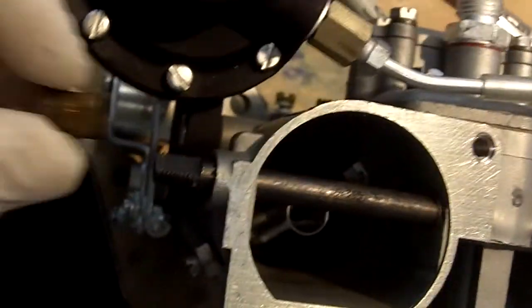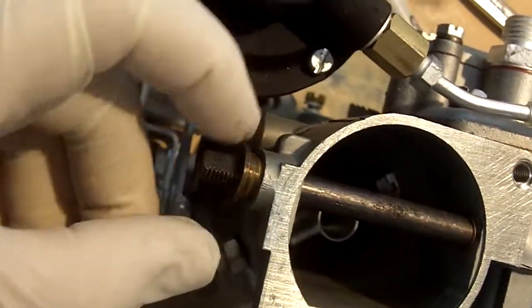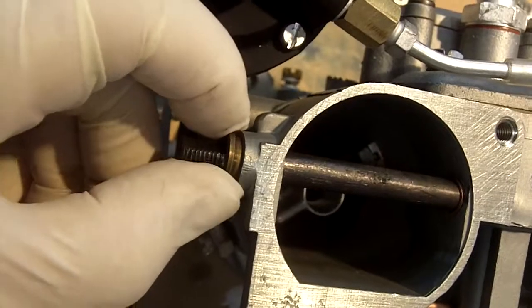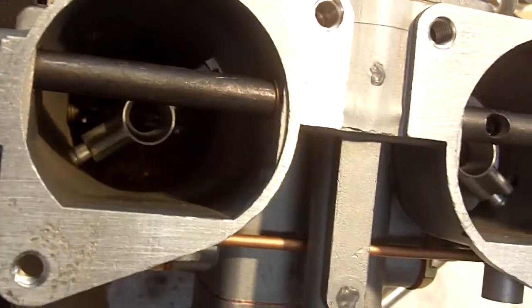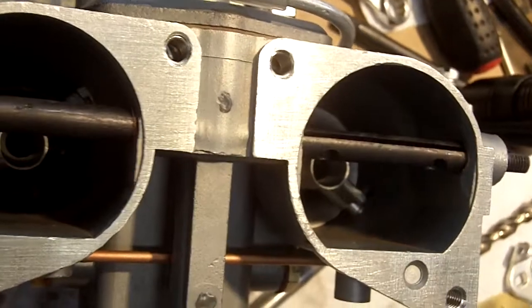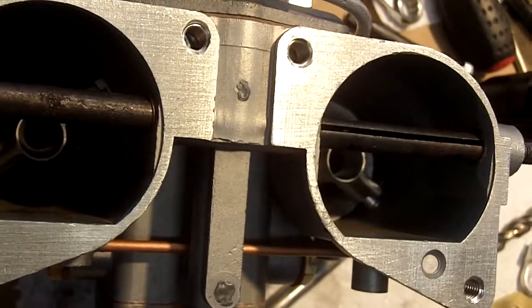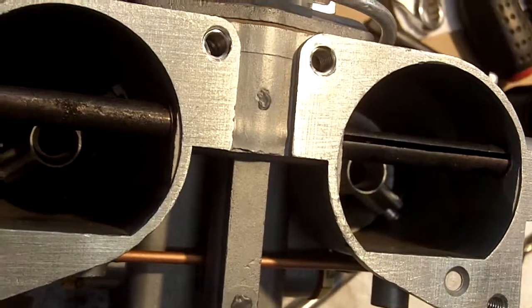When you stick this bushing in here like it's supposed to go—this actually should be a press fit, but we'll Loctite it in place anyway—when this gets in here, we no longer have smooth operation. It won't turn smoothly, it hangs up right about there, so that means your choke is not going to work properly.